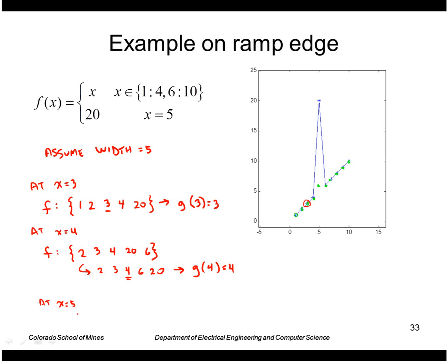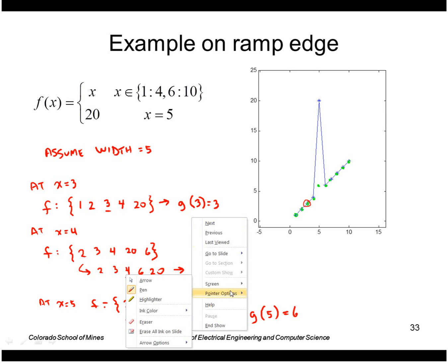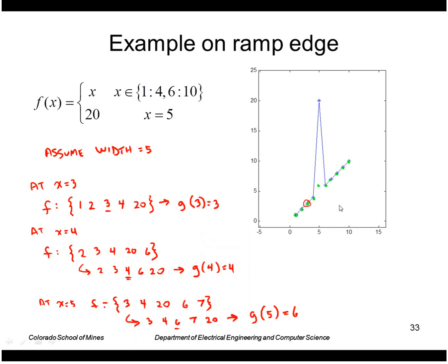At x equals 5, f is the set 3, 4, 20, 6, and 7. So g of 5 is 6. You can see it knocked down that peak without really affecting the values in the rest of the image.